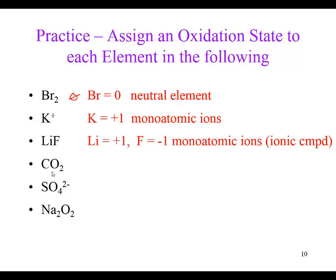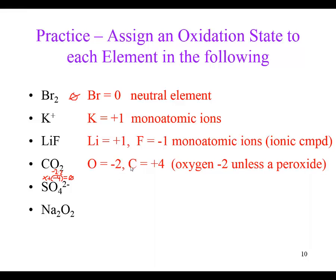Since this is a neutral molecule, all the oxidation numbers should add up to zero. The oxidation number for carbon plus the negative four from the two oxygens equals zero. Solving for carbon, it would have to be a positive four. So in CO₂, oxygen is a negative two and carbon is a positive four.